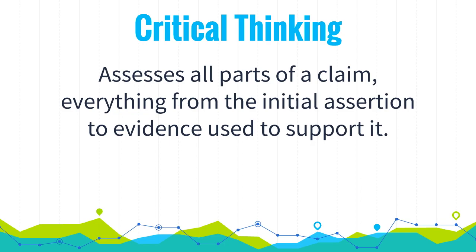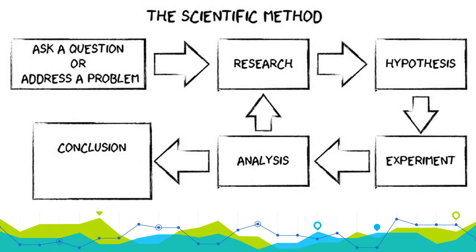Moving on to the scientific method overall — there are six total steps. You start with a question, then do research, form a hypothesis based on your research, experiment to test that hypothesis, and then do some analysis. If the analysis doesn't make sense, you go back to researching. If it does, you form a conclusion — your hypothesis becomes a conclusion.